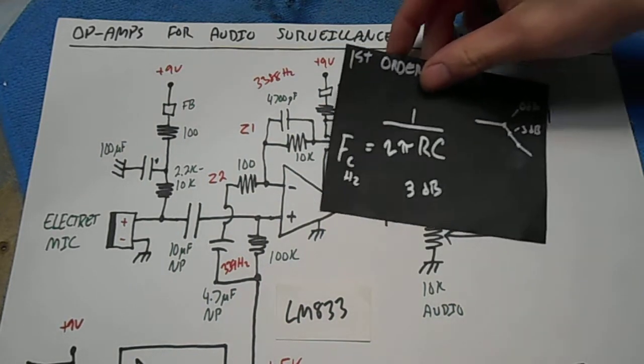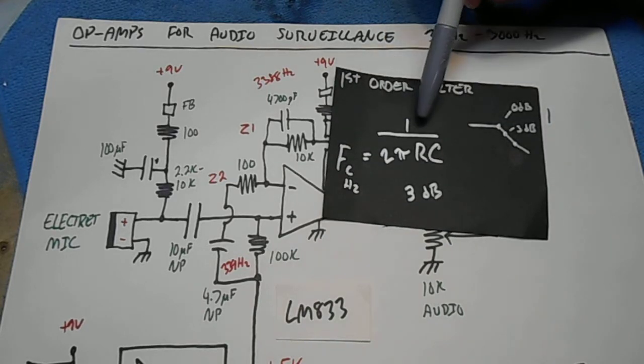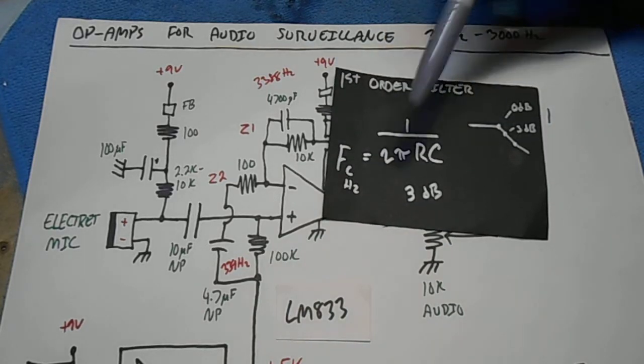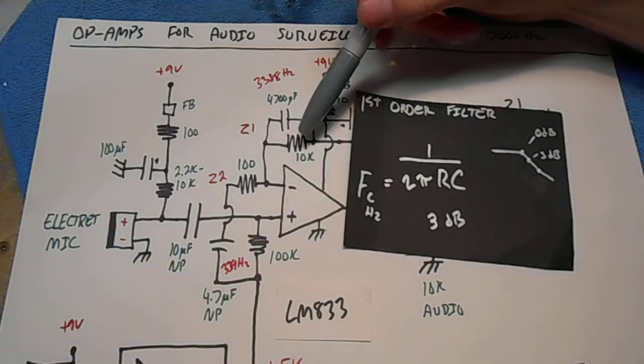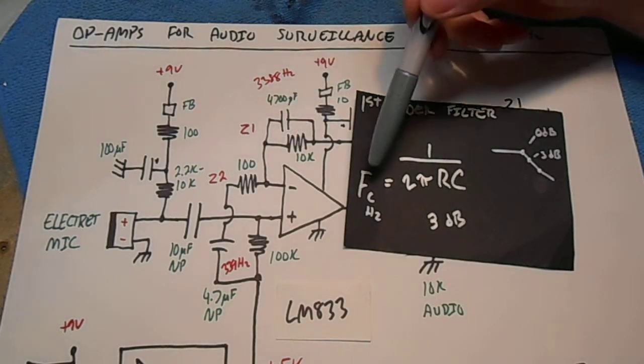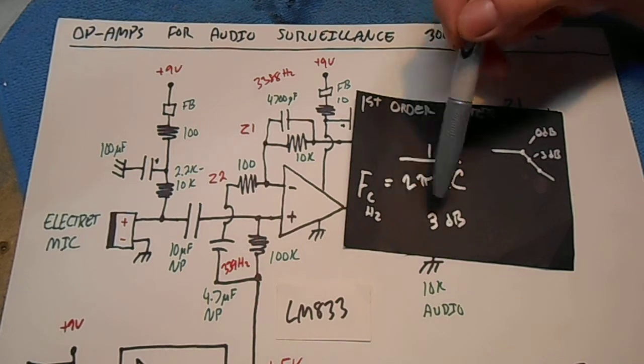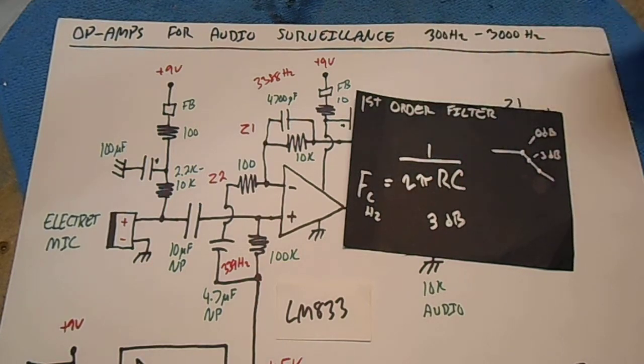The frequency cutoff for those filters is determined by the equation 1 over 2 pi RC. R is your resistor, C is your capacitor. The cutoff frequency in Hz is the 3 dB point of the roll-off of the filter.